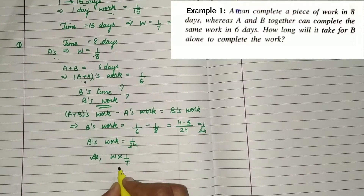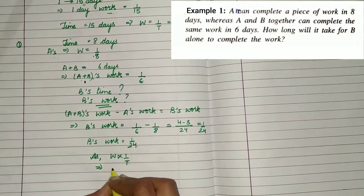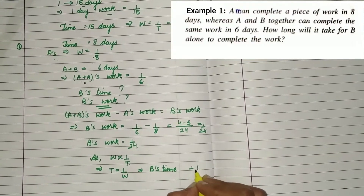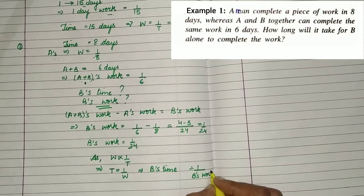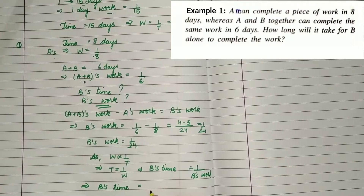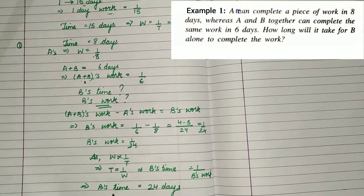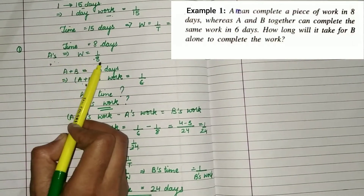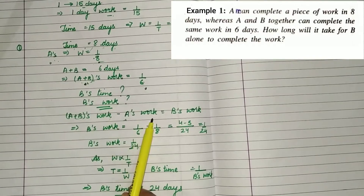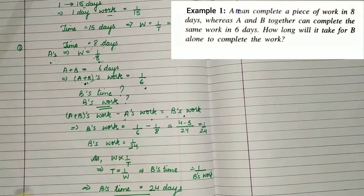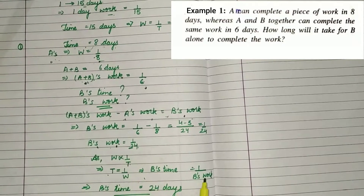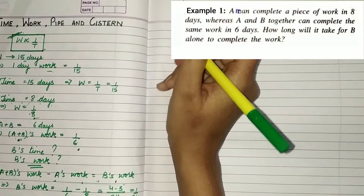It is simple. It is based on just one concept that work and time are inversely proportional. So since B's work per day is 1 upon 24, the time B will take working alone is 24 days. A was doing 1 upon 8, A and B combined was 1 upon 6, so B alone takes 24 days.